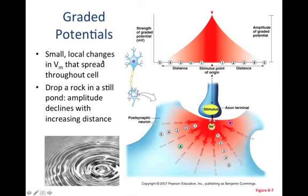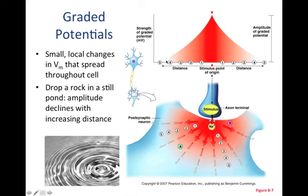Graded potentials are small, local changes in the membrane potential that spread throughout a cell. In this example, we have one axon terminal that synapses with a postsynaptic neuron, and the graded potential generated ultimately leads to the influx of a positively charged ion like sodium. This would be an excitatory postsynaptic potential, or an EPSP, and the positive charge that enters the cell would spread throughout the cell over time and space, so the amplitude of the graded potential wanes as you get further from the synapse.